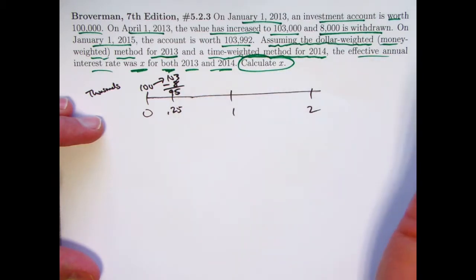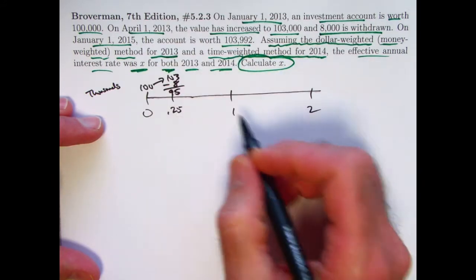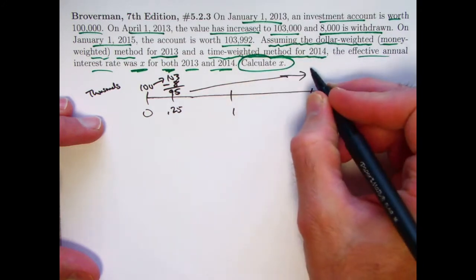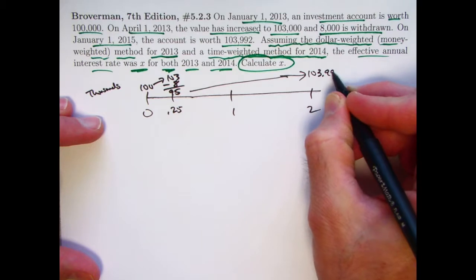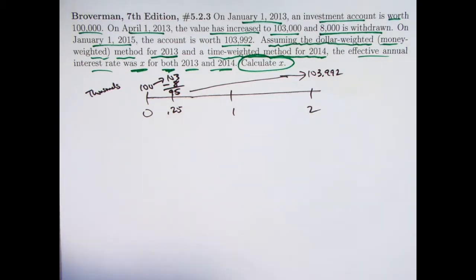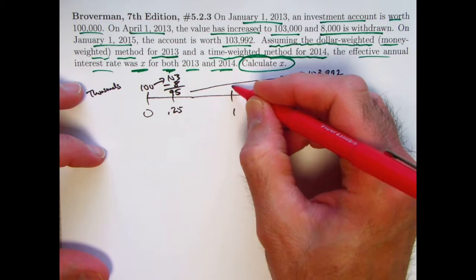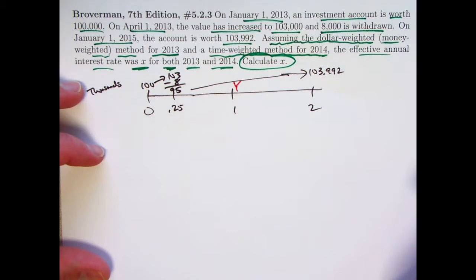We're not told you have any other withdrawals or deposits. We're told then at time two, January 1st, 2015, the value is up to 103,992, which in thousands would be 103.992. Since we are going to be thinking about time-weighted rate of return for the second year, we are going to need to know the balance at time one, or at least have a symbol for it. Let's call it Y for the balance at time one.